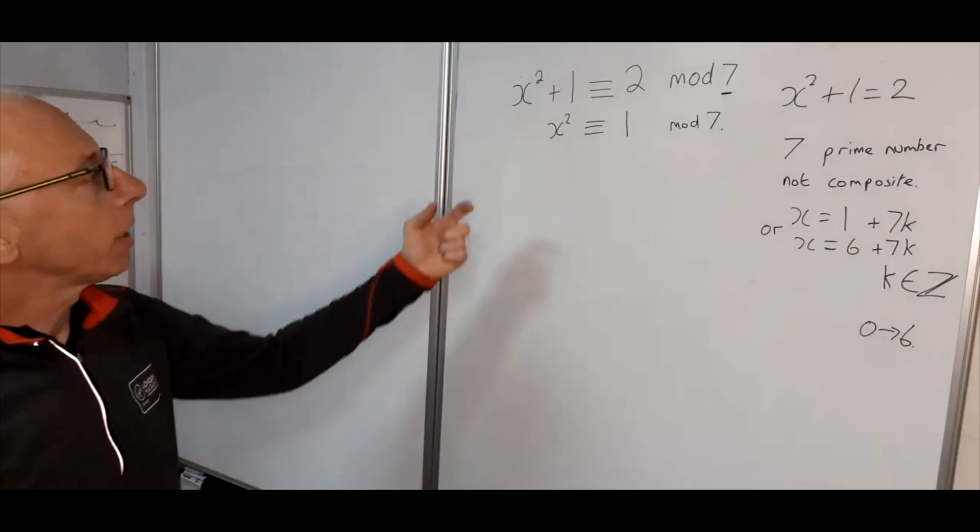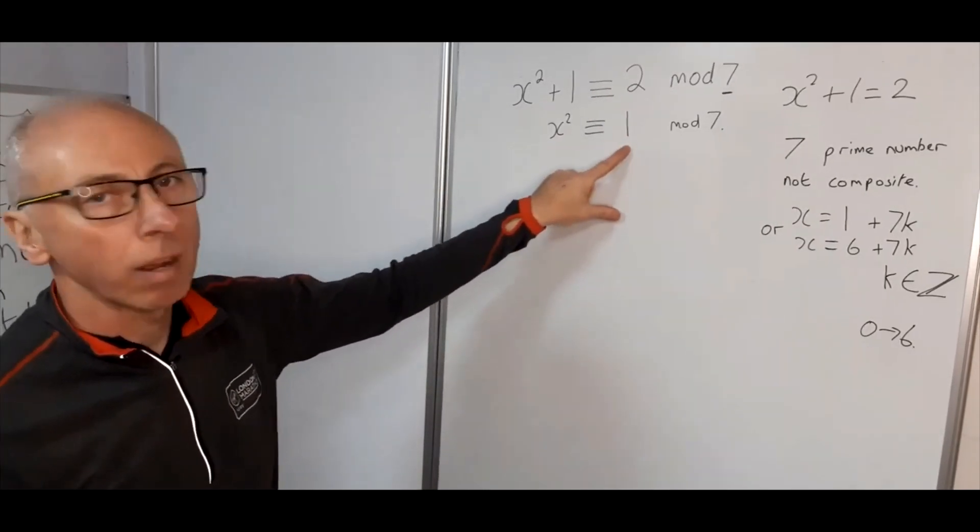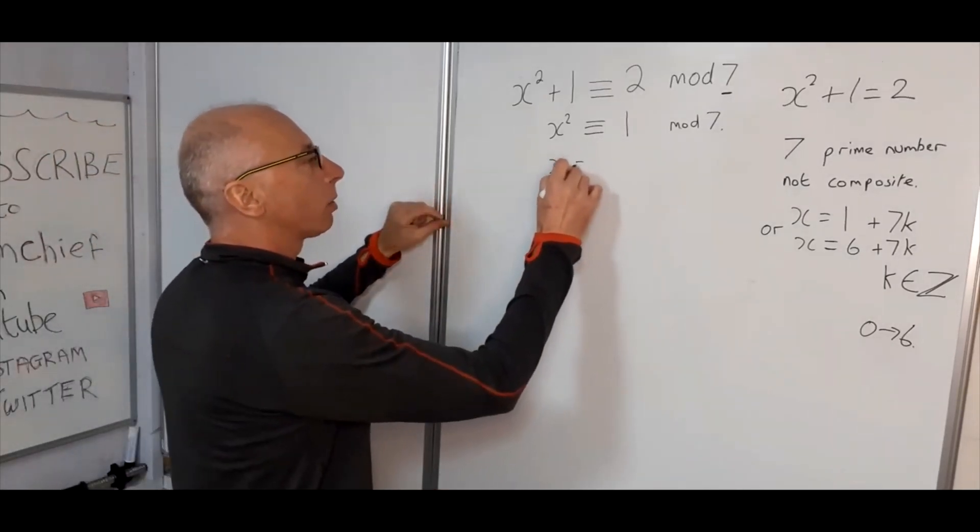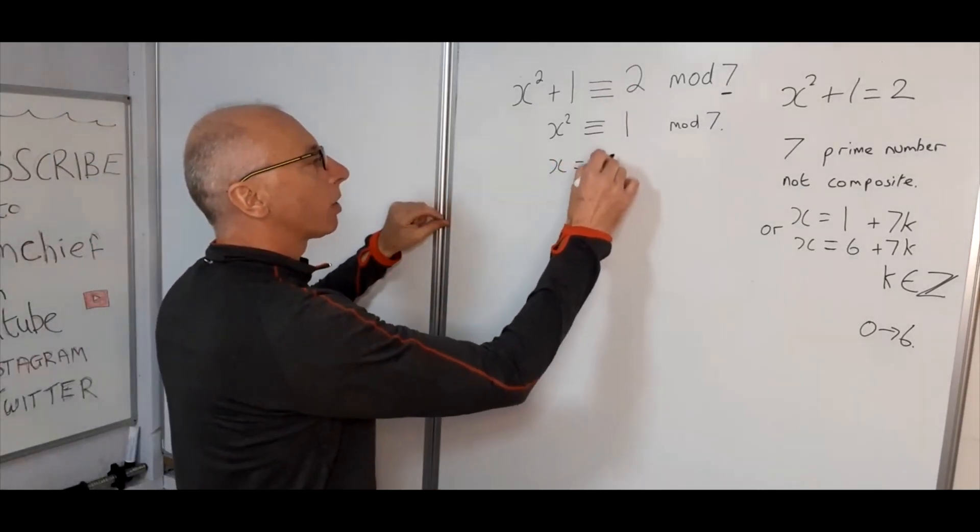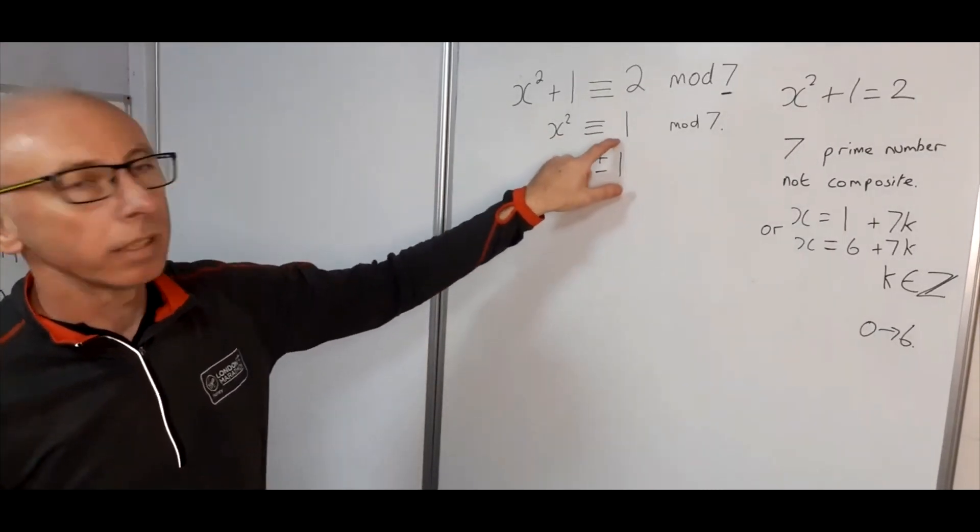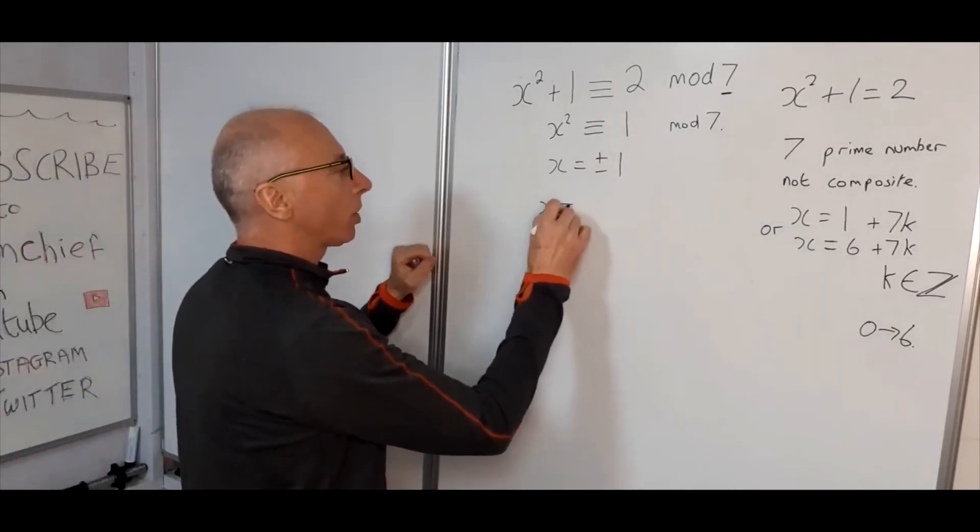So now what we do is we can just see the solutions when we square a number to get 1. Well, we know that x can be equal to plus or minus 1. So 1 squared is 1, and minus 1 squared is also 1. So then back to how it was in the previous question.